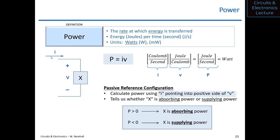If the arrow were pointing into the negative side of V, you would have to flip that arrow and write negative I instead. So if the arrow were coming in from the bottom, P would equal negative I times V. Always arrange the polarity and reference direction such that the reference direction of I points into the positive side of V when calculating power.